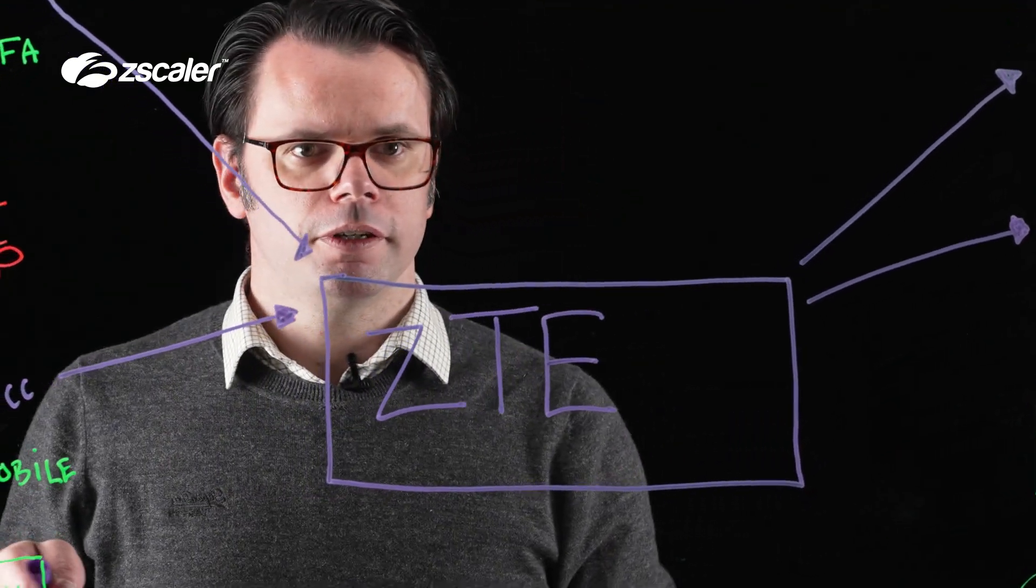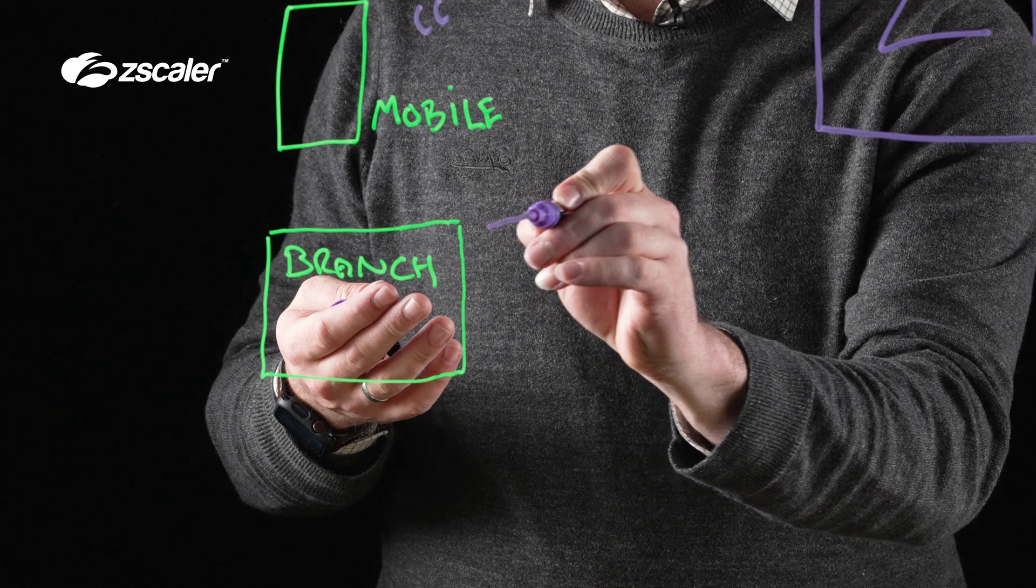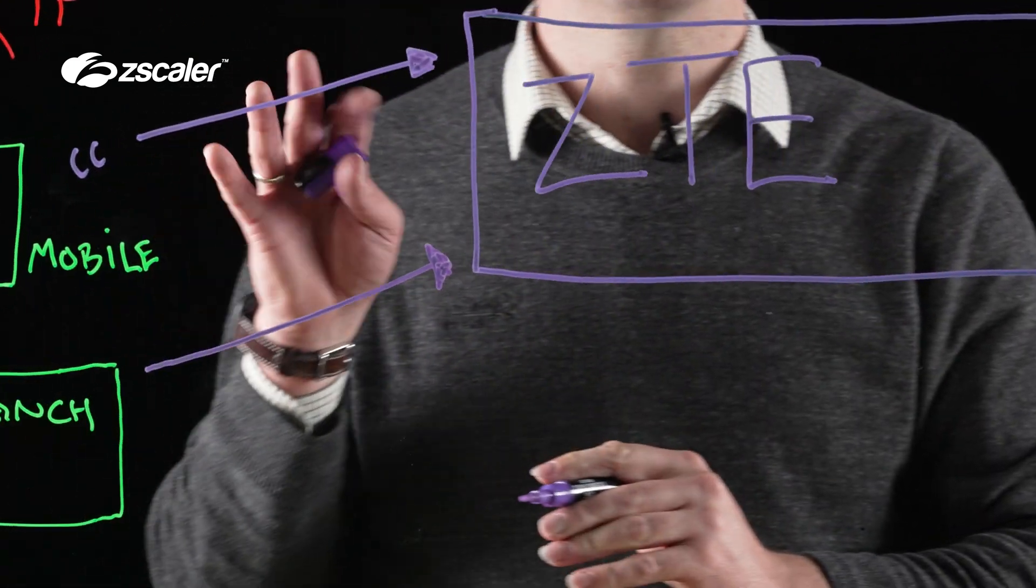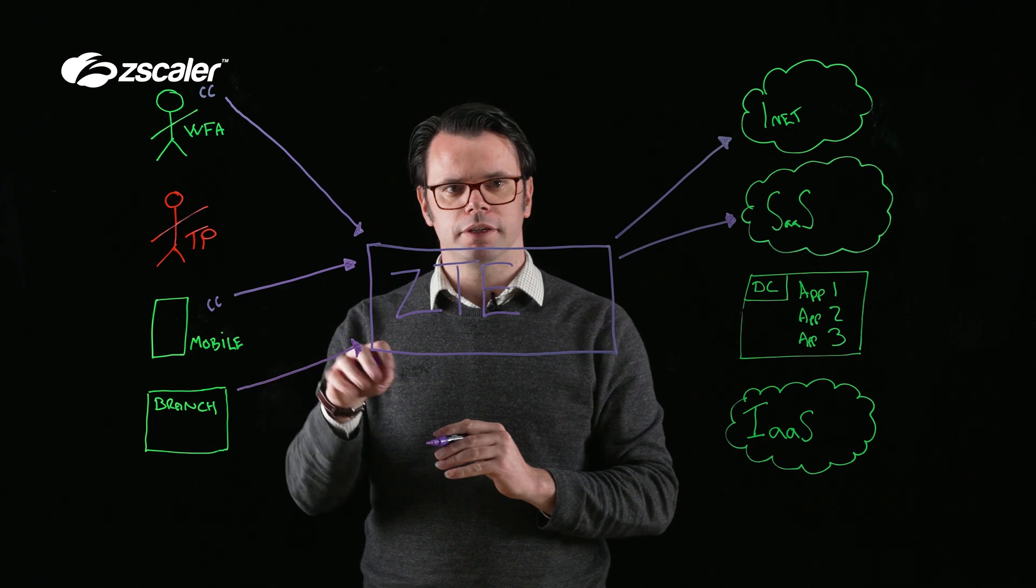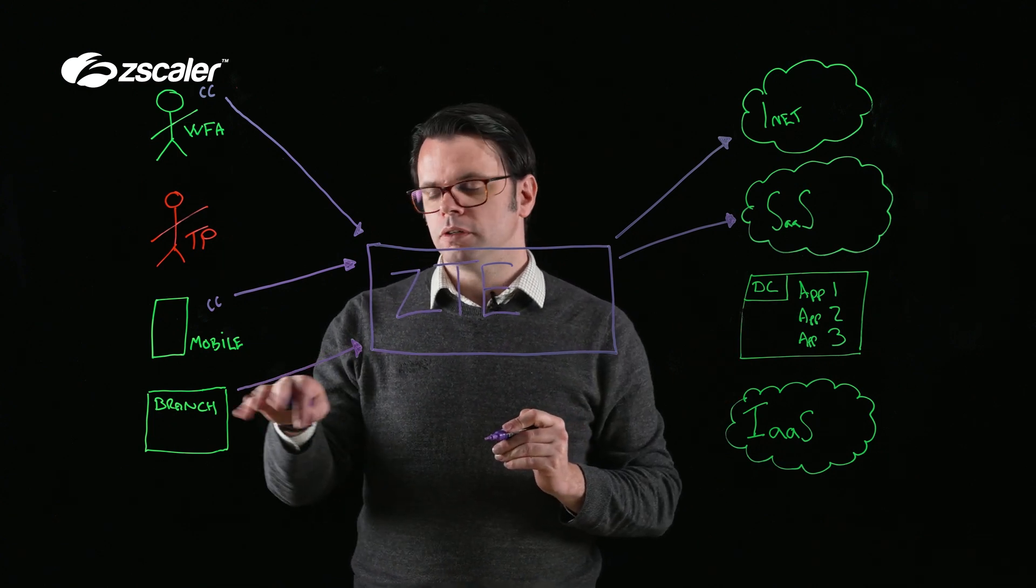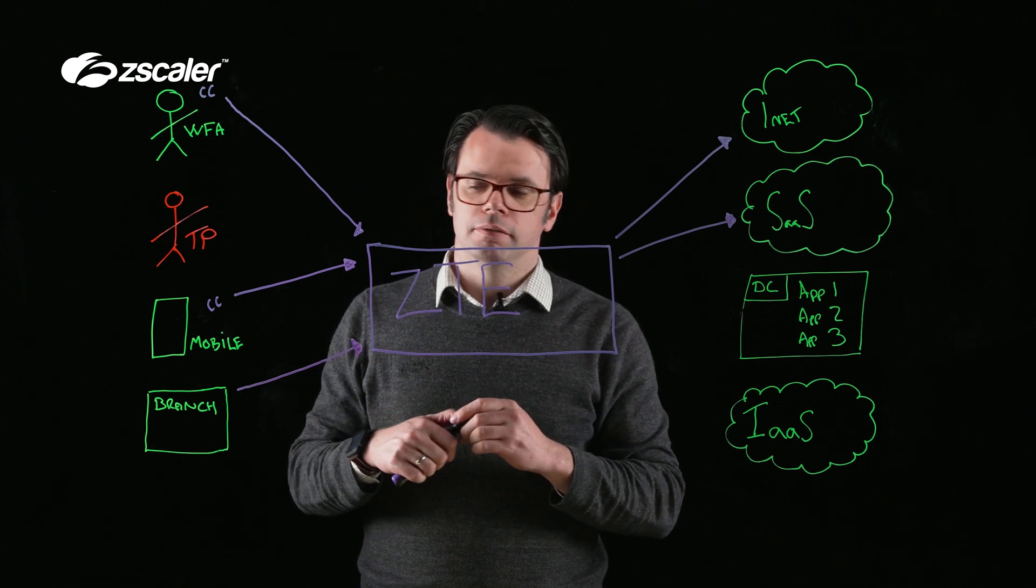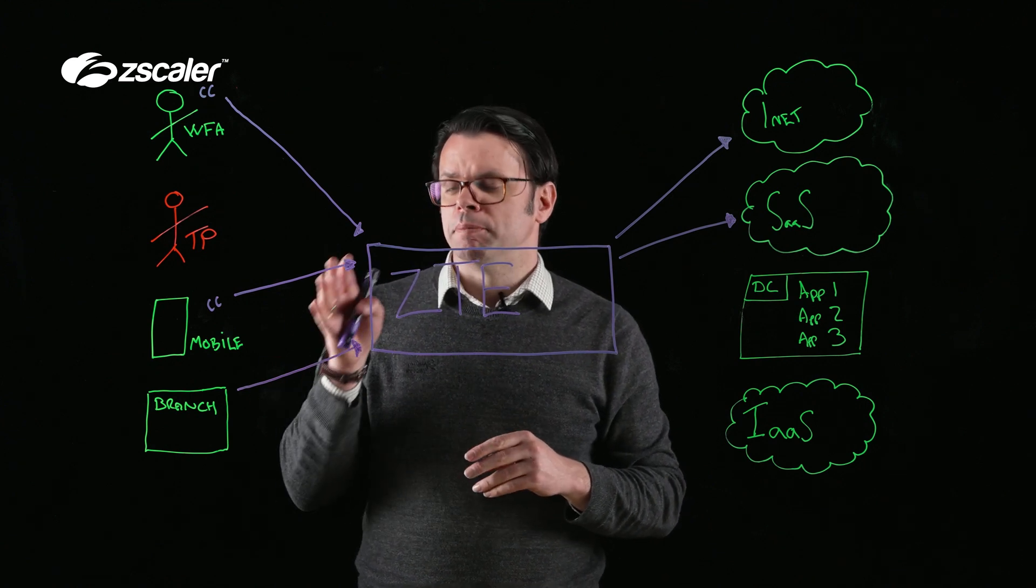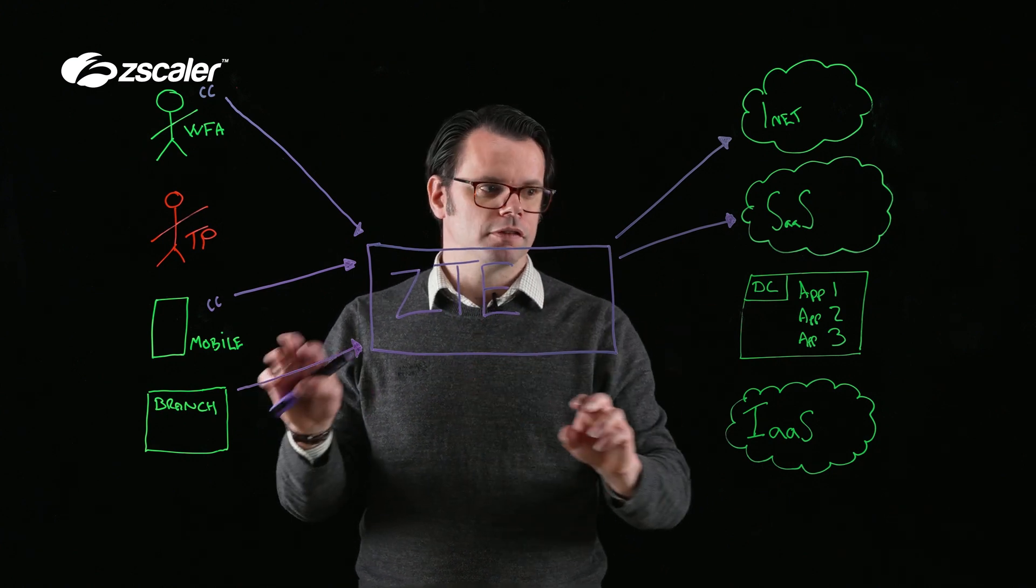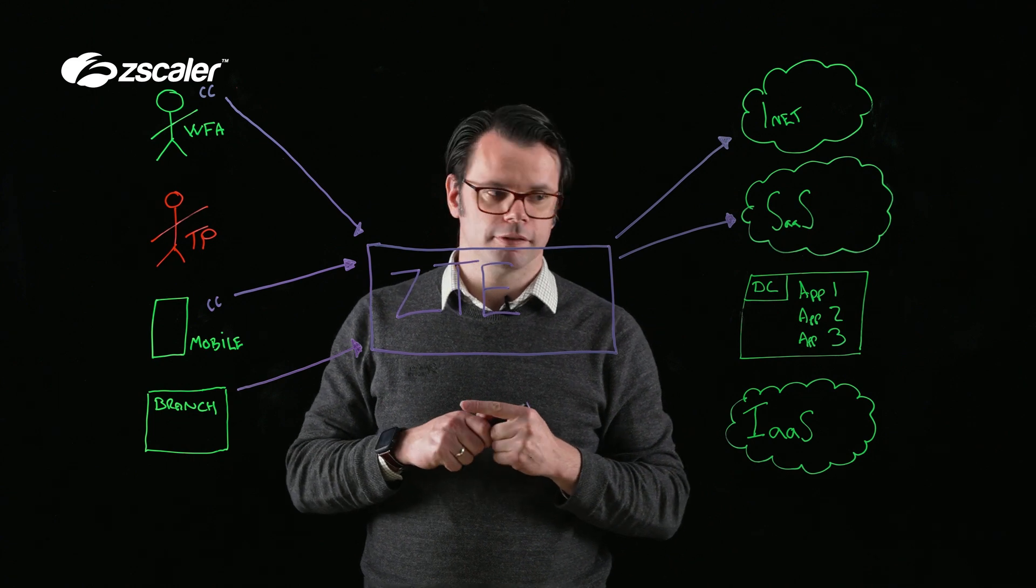When we think about branches, there are really two options. You can use your existing CPE, you can build GRE or an IPSec tunnel, and you can send all of your unmanaged device traffic to us, same from the data center. Optionally, you can deploy one of our branch connectors, which would allow for bi-directional communication through the Zero Trust Exchange to destinations within your data center and your infrastructure as a service.